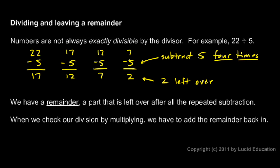So our answer is 4 and then remainder of 2. We subtracted 5 four times. That's how many times 5 can go into 22. And when we do so, we have 2 left over.